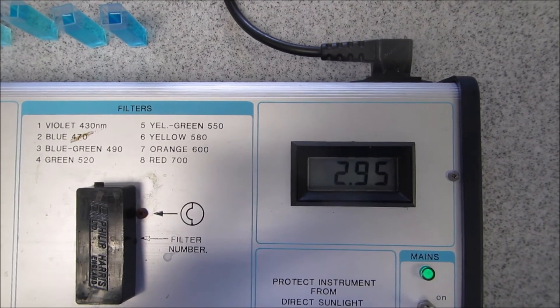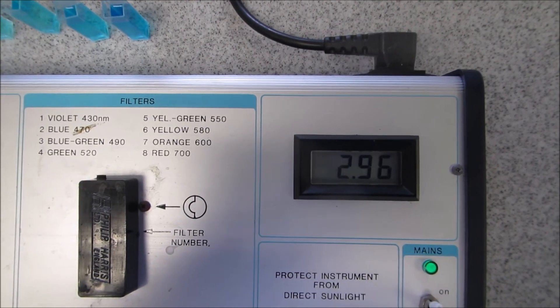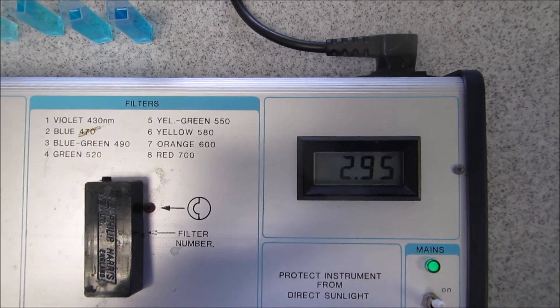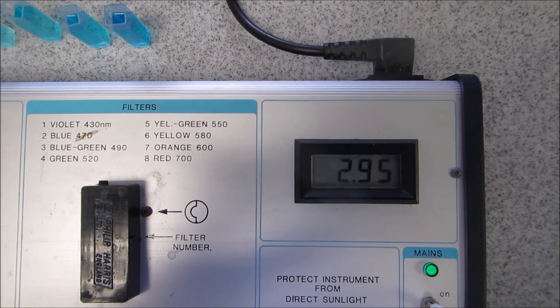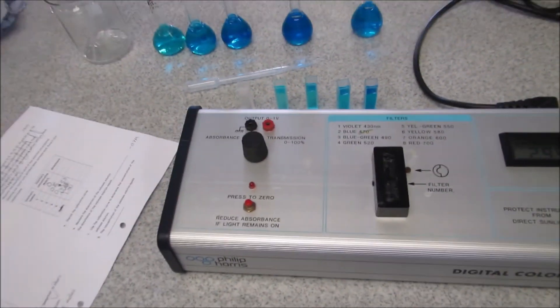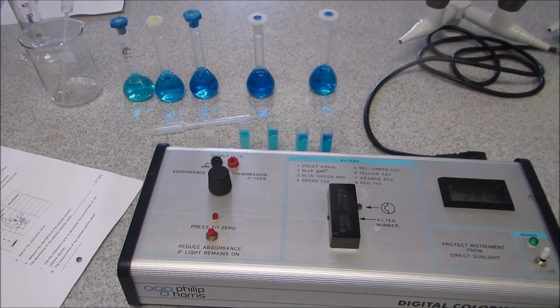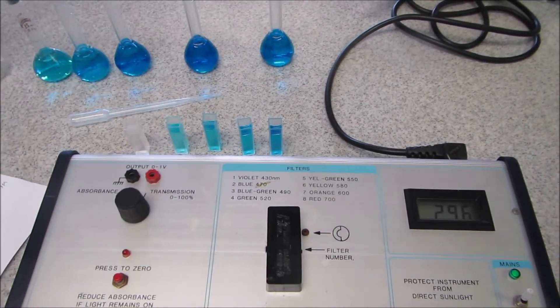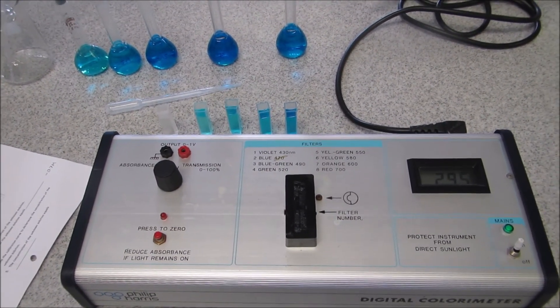Once it settles you can now use this absorbance and your calibration curve to read across from the absorbance to work out what concentration it actually is. That's how you can produce a calibration curve on a colorimeter to work out the concentration of an unknown solution.